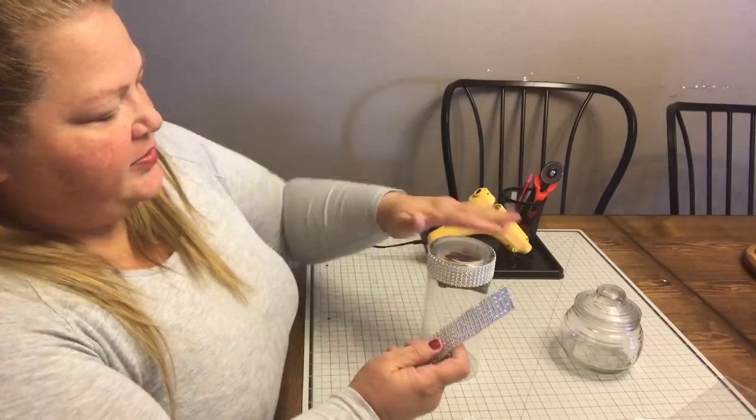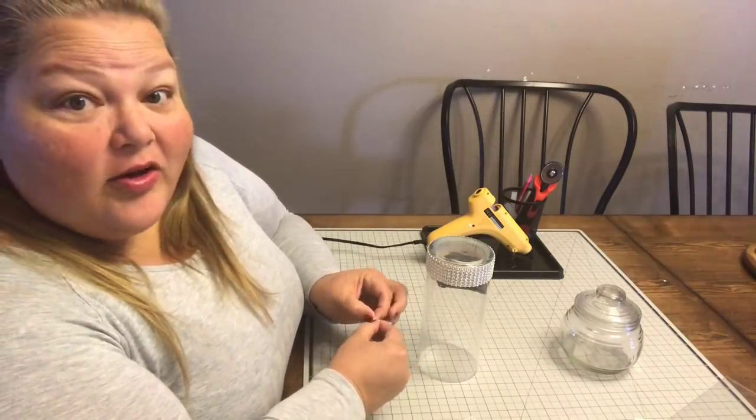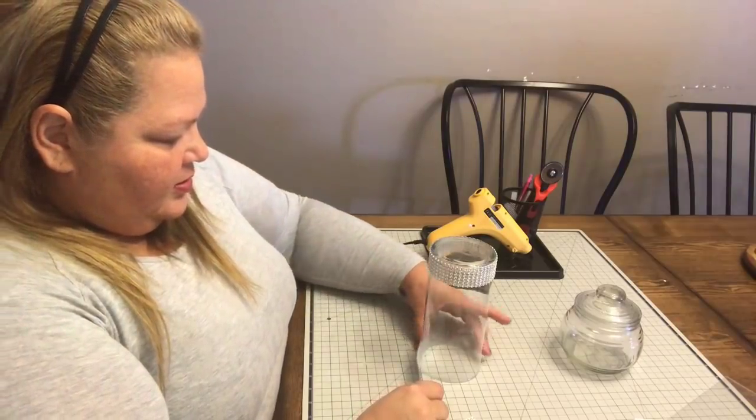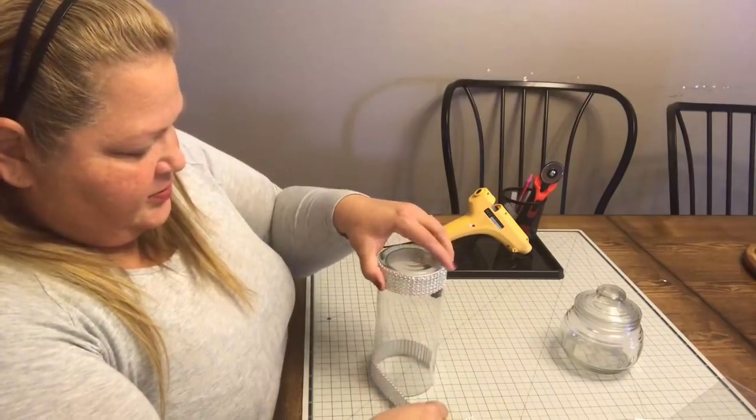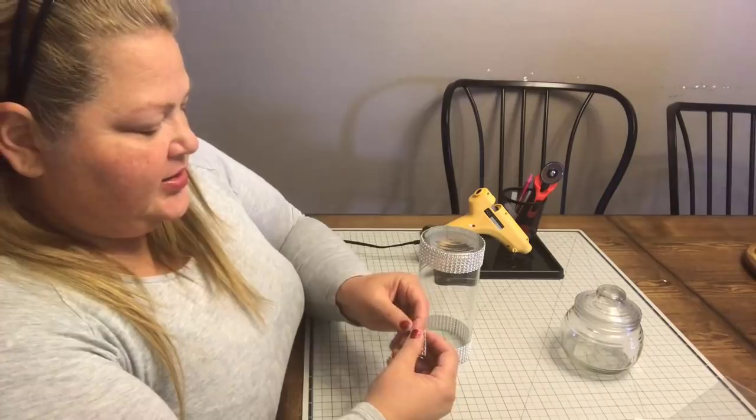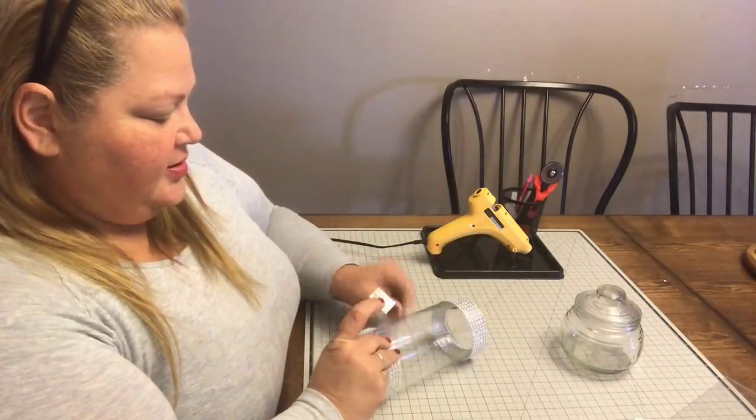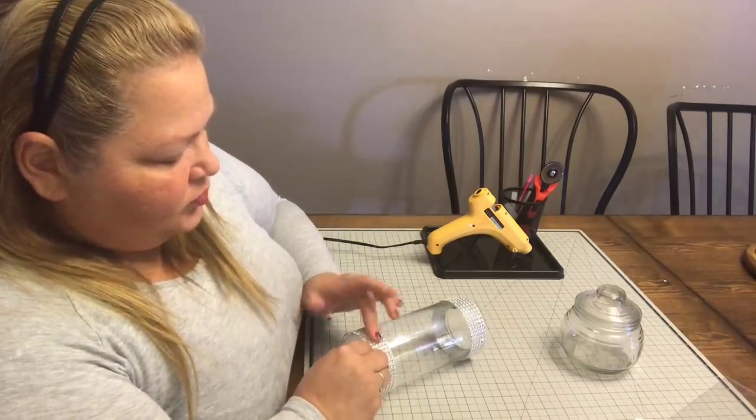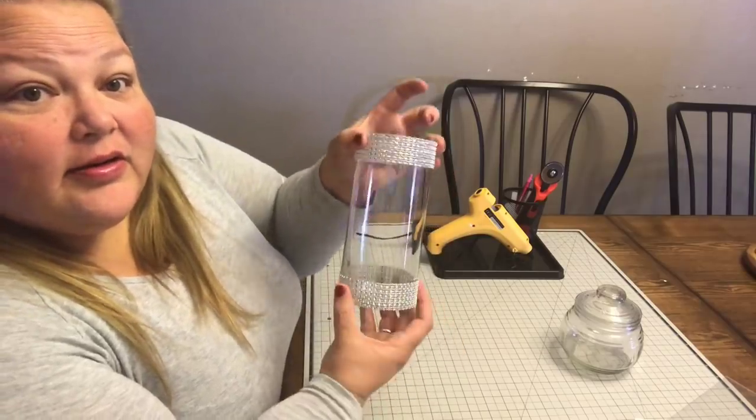You cannot tell at all where that goes. Now we're going to do the top. This side works so easy that I'm going to do the exact same thing to the top—I'm just going to flip it over and do the exact same thing rather than trying to line it all up. You just kind of hold it along the bottom and twist this onto it, and it seems to be working rather well.